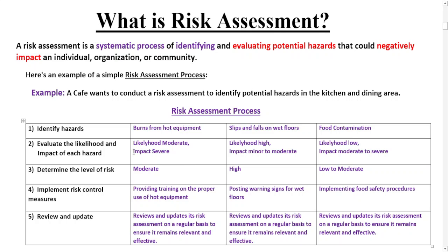The third step is to determine the level of risk. This involves combining the likelihood and impact of each hazard to determine the overall level of risk. For example, a hazard with high likelihood and high potential impact would have an overall high level of risk. In our cafe example: burns from hot equipment have a moderate overall risk level; slips and falls on wet floors have a high overall risk level; and food contamination is low to moderate.